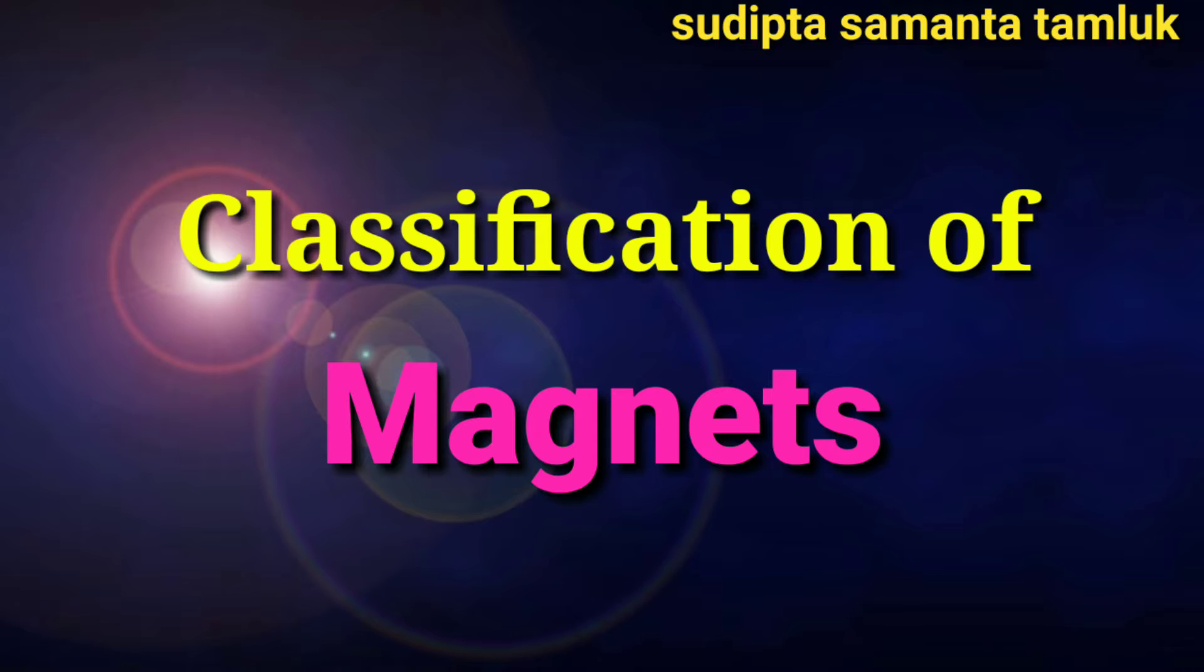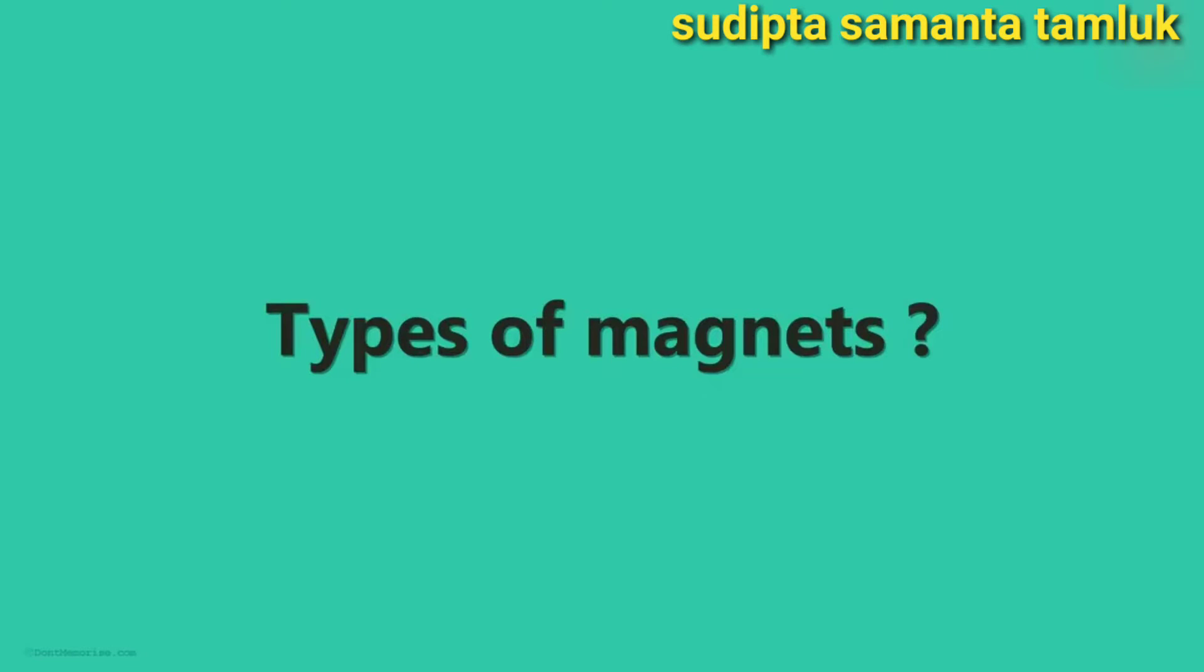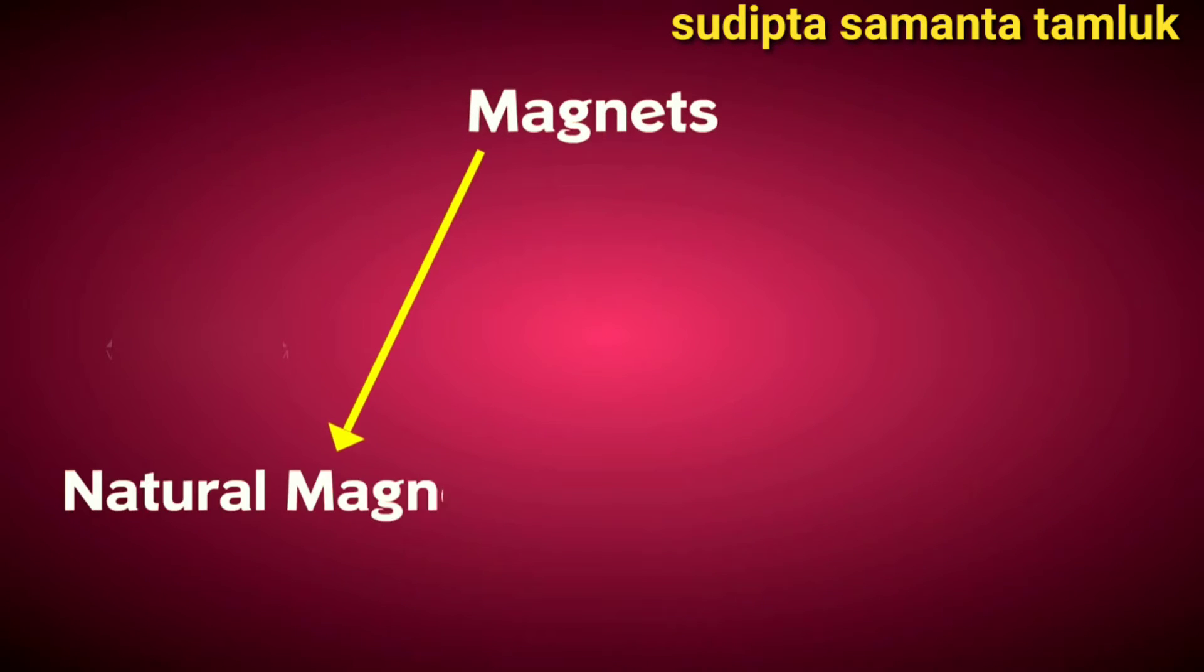Classification of Magnets. One of the ways in which we can classify them is based on their occurrence. Two types of magnets exist, natural magnets and artificial magnets.